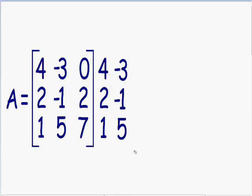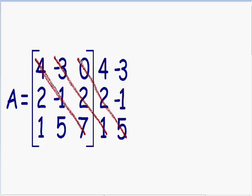After we copy the first two columns and place them to the right of the matrix, notice how we can create three diagonals. Starting at the top left part of the matrix, we can create one diagonal, two diagonals, and three diagonals. We need to multiply all three diagonals. Multiplying the first diagonal: 4 times negative 1 is negative 4, and negative 4 times 7 is negative 28.